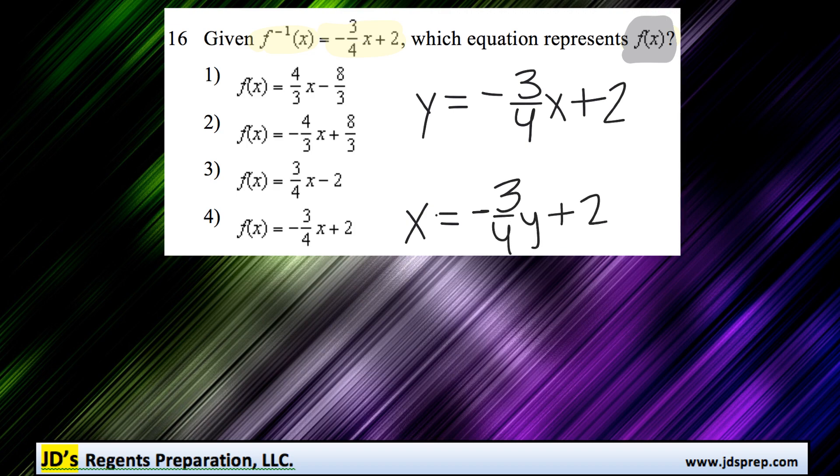Now we'll manipulate the equation to isolate y. We'll start by subtracting 2 from both sides, and we get x minus 2 equals negative 3 quarters y.